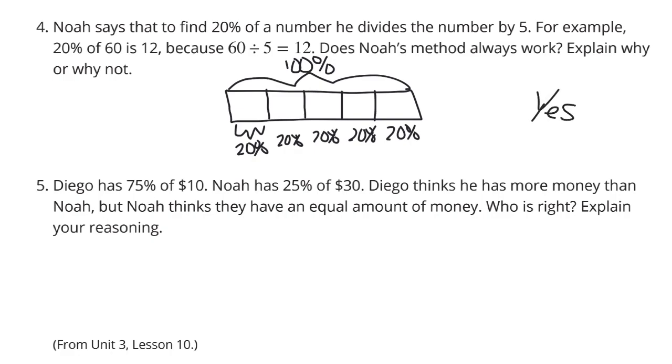And what he did here was to say, well, if my 100% is 60, I can take 60 and divide it into 5 and get these 12. So 20% of 60 is 12.